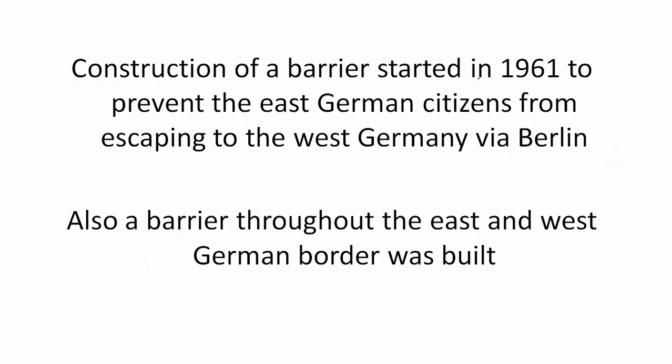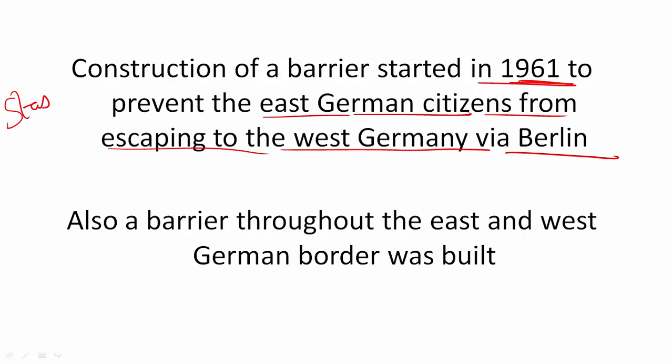Construction started in 1961. It was to prevent East German citizens from escaping to West Germany via Berlin. Everyone wanted to escape East Germany because there was a dictatorship and communist rule. The rule was very oppressive — there was a secret service police called the Stasi which recorded everything, high level of surveillance, hardly any civil rights, very little freedom of movement. You could not go to West Germany or even visit your relatives. So people just wanted to get away from East Germany, and this is why the government decided to build the wall.